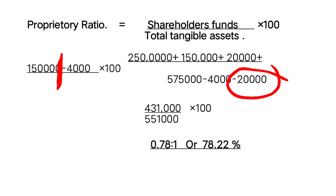So proprietary ratio is four lakh thirty-one thousand divided by five lakh fifty-one thousand, multiplied by one hundred, giving 0.78:1 or seventy-eight point twenty-two percent. Thank you for your time, I hope you understood. If you have any doubts, you can ask.